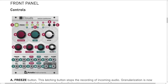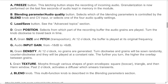Front panel — Controls. A: Freeze button. This latching button stops the recording of incoming audio. Granularization is now performed on the last few seconds of audio kept in memory in the module. B: Blending parameter / audio quality button. Selects which of the blending parameters is controlled by the blend knob and CV input, or selects one of the four audio quality settings. C: Load/save button — see the advanced topics section.